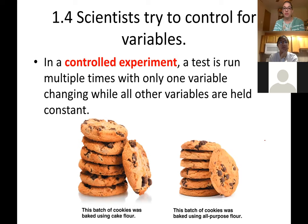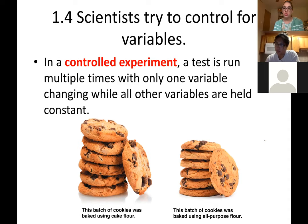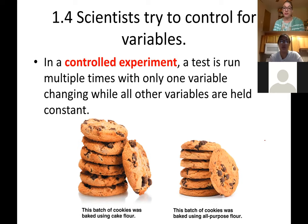When doing experiments there are different ways to conduct them. In a controlled experiment a test is run multiple times changing only one variable and keeping everything else constant. In this illustration it's talking about two batches of cookies - one with all-purpose flour and one with cake flour. You could run a controlled experiment changing only one variable, the flour, and keep all other ingredients and quantities the same. That's an important aspect of a controlled experiment - only modifying one variable so you can actually determine if there has been a change.